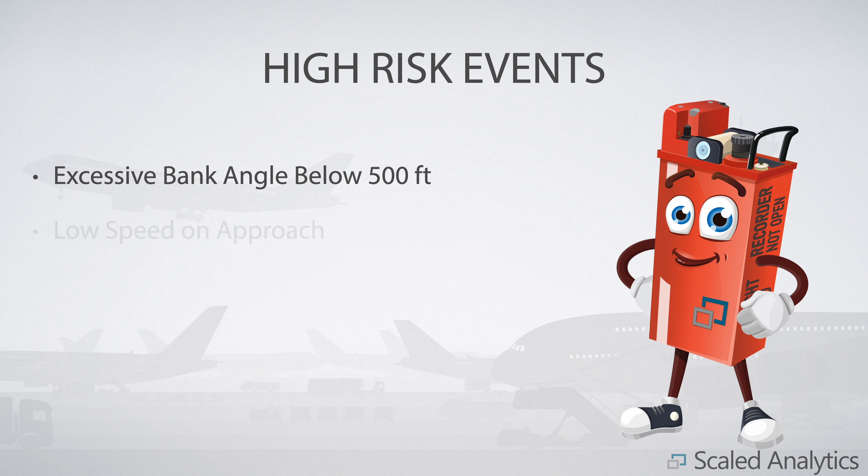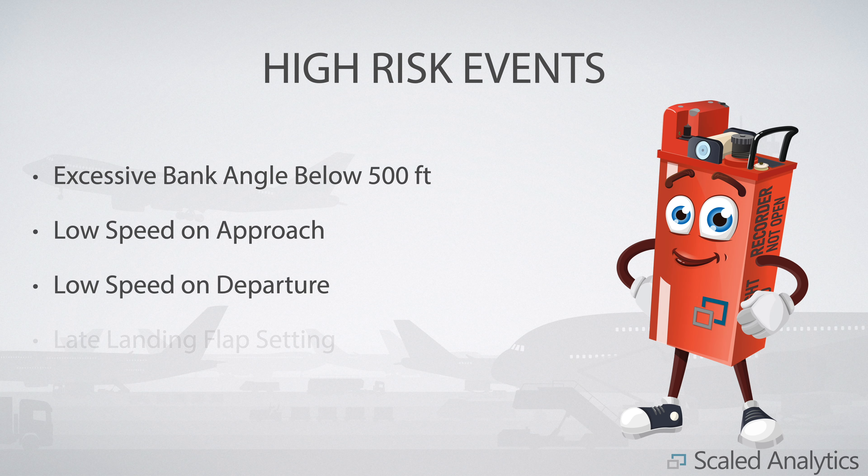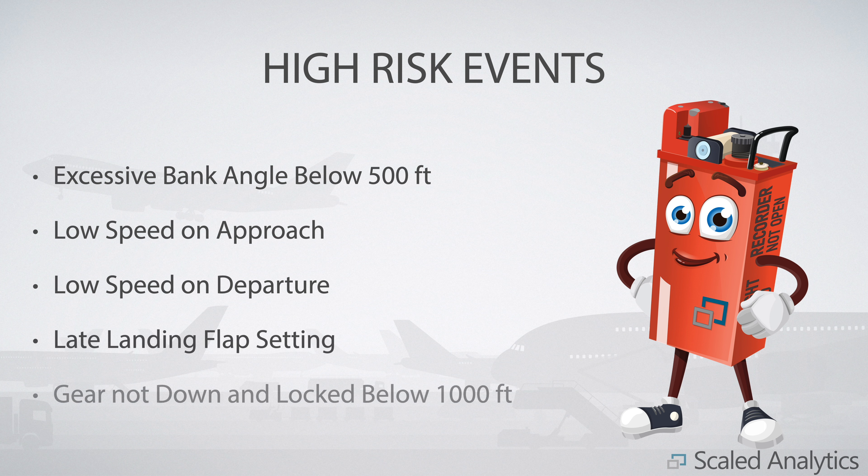These would be the events that tie into your SMS program — events that, if left alone, could lead to something very serious like an incident or worse. For fairly obvious reasons, these are going to be events that occur near the ground: your departure and arrival events. Examples include excessive bank angles on approach, low speeds on arrival and departure, late configuration changes, or any items typically associated with unstable approaches. Start by looking at these events to see if the severities and frequencies are acceptable, or if changes need to be made.